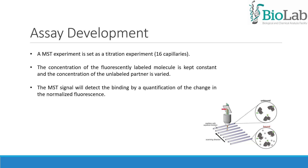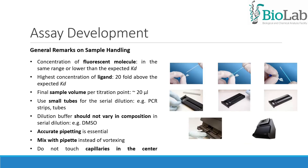Regarding assay development, an MST experiment is set up as a titration experiment. The concentration of the fluorescently labeled molecule is kept constant, and the concentration of the unlabeled partner is varied. The concentration of fluorescent molecules should be in the same range or lower than the expected KD, and the highest concentration of ligand should be 20-fold above the expected KD. The final sample volume per titration point is around 20 µL. Accurate pipetting is essential; you must mix by pipetting instead of vortexing, and you should not touch capillaries in the center.